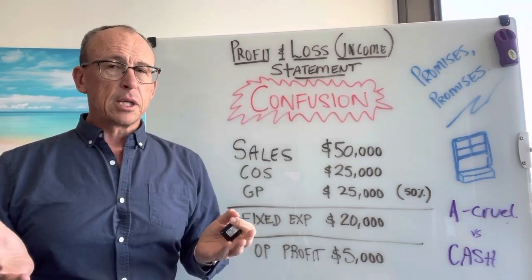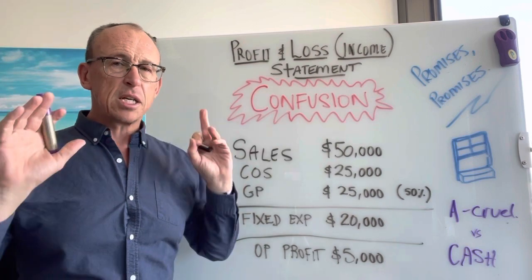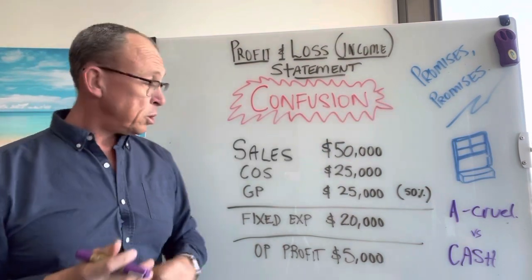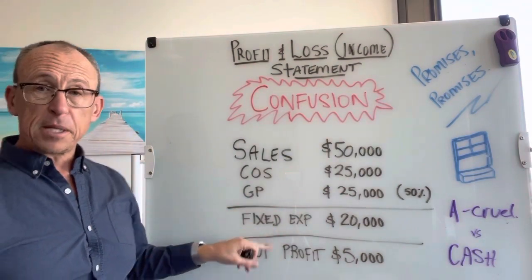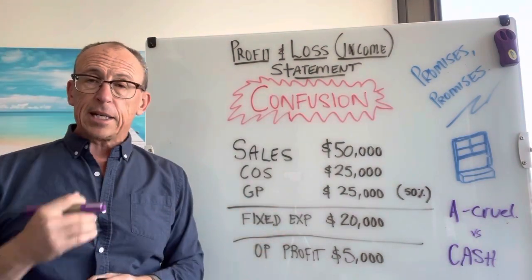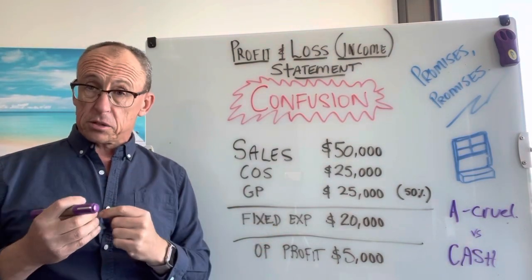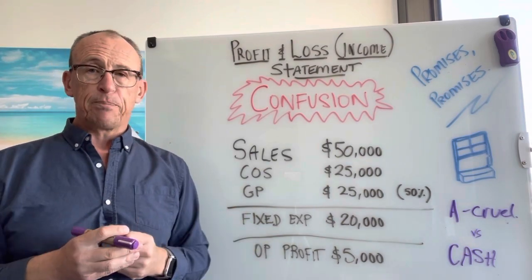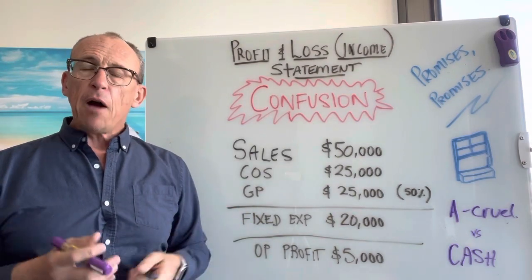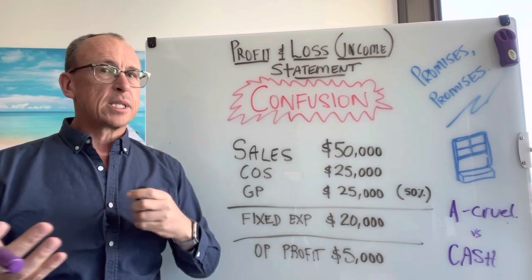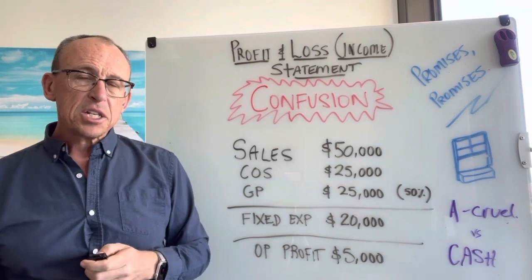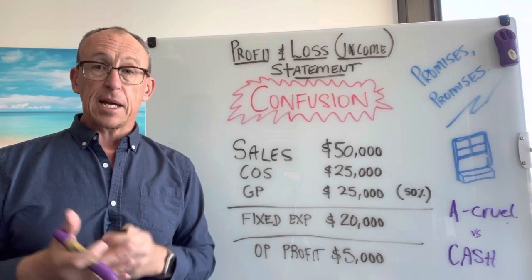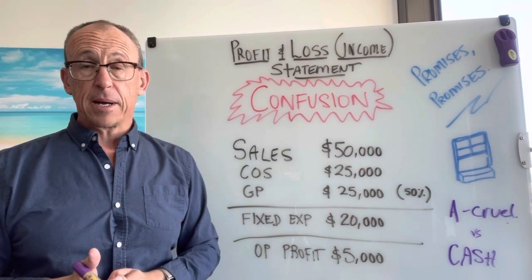So that's where the big confusion comes — profit is just theory. Someone has promised you they're going to pay you. Similarly, for our fixed expenses, we get an invoice from someone for products or services, we log it, but the cash hasn't moved yet. Hopefully that helps you understand a bit more about what's going on with profit and loss and cash. As you start to teach people and work with them on this, and in your own business, it starts to make some sense.